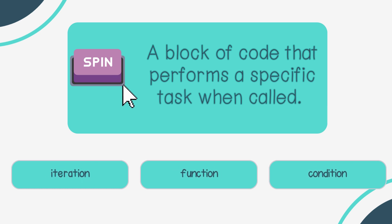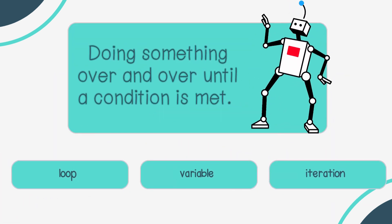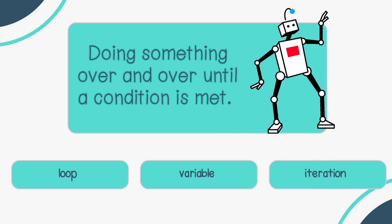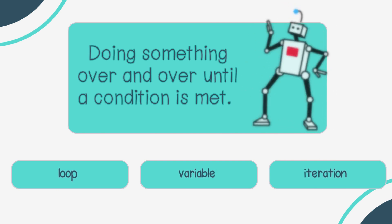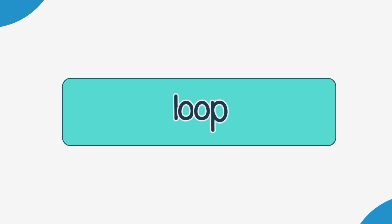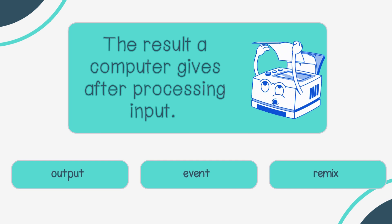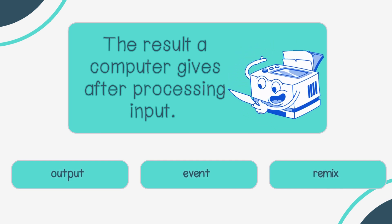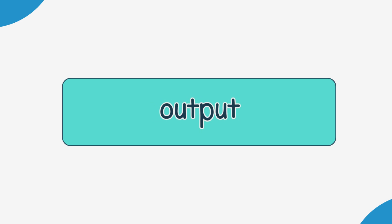A block of code that performs a specific task when called — iteration, function, or condition? Function. Doing something over and over until a condition is met — loop, variable, or iteration? Loop. The result a computer gives after processing input — output, event, or remix? Output.